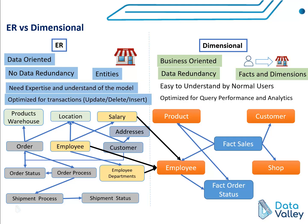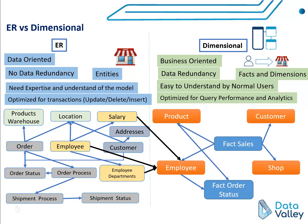In dimensional modeling it is easy to understand by normal users. Any non-technical person looking at the diagram can understand that one table holds product information, another holds customer information, and so on. Because dimensional modeling is self-descriptive, you can understand relationships between tables and guess the available information in each table. Since the focus is on extracting KPIs and presenting business processes, dimensional modeling is optimized for query performance and analytics — which is our target.